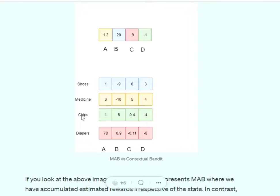Here you can see shoes, medicine, chips, diapers represent the context from which the user is coming, and then the products A, B, C, D.